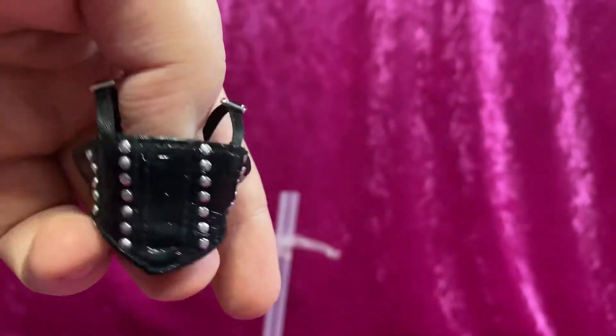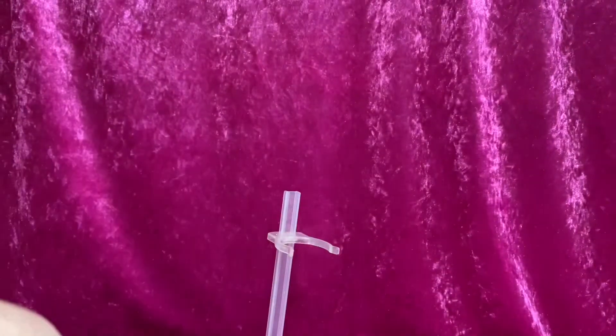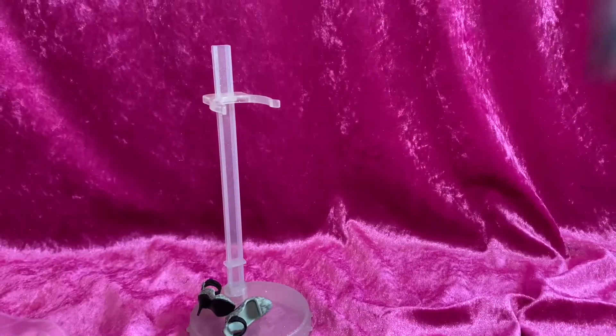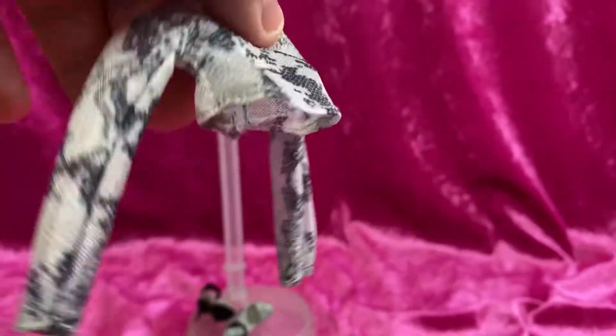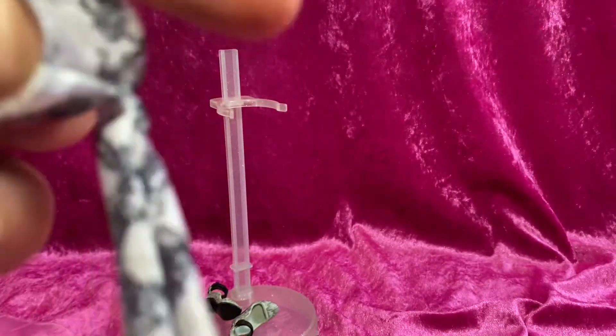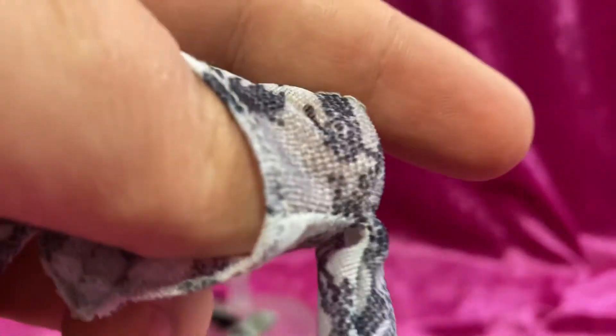Hopefully this actually fits her because some people have troubles with that not fitting. Her sheer top, fishnet top—I don't know what you call this, honestly. It's very transparent material, and it has snakeskin printed on it. It's like a mesh, I guess.